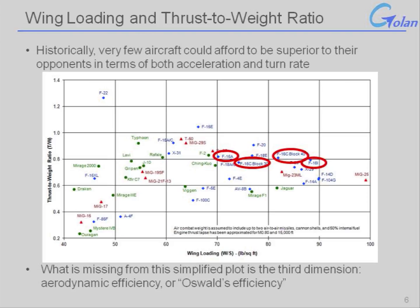But the wing loading continued to get progressively higher and higher with each evolution of the F-16. If we take a look at the nearest derivative of the F-16 from the 1990s — the Japanese F-2 — we can see that one of the things the Japanese did was they increased the wing area of the aircraft, effectively restoring the wing loading of the original F-16A, the old Block 10 and Block 15 type aircraft.